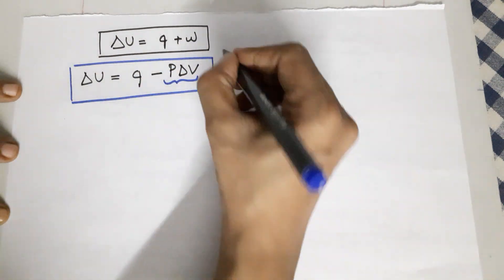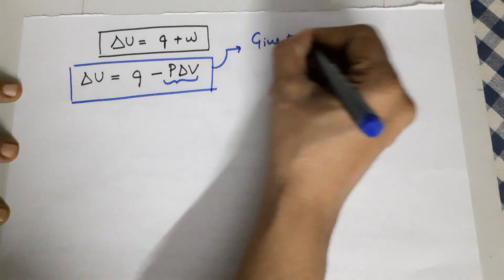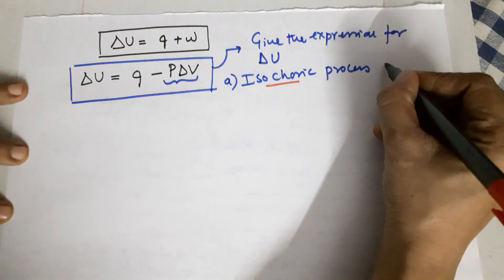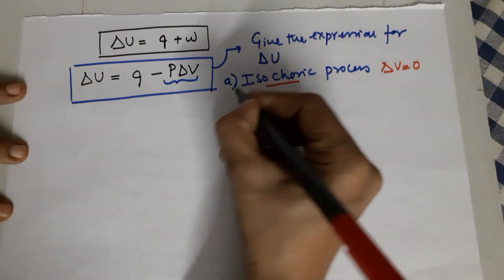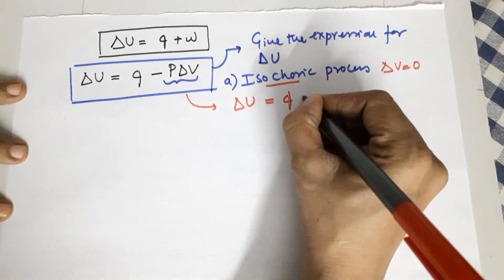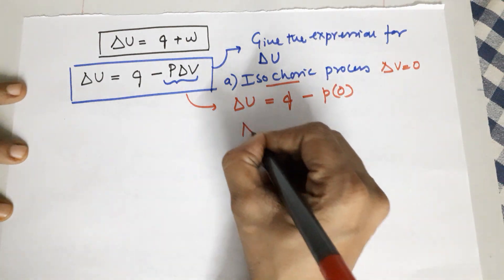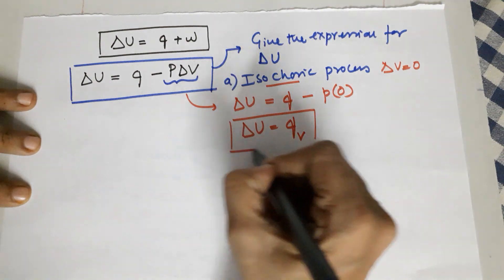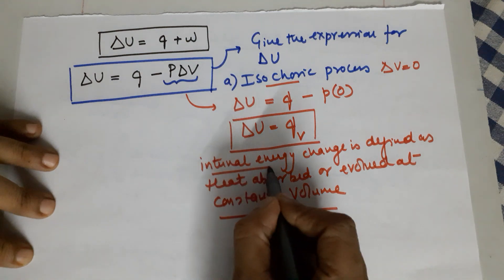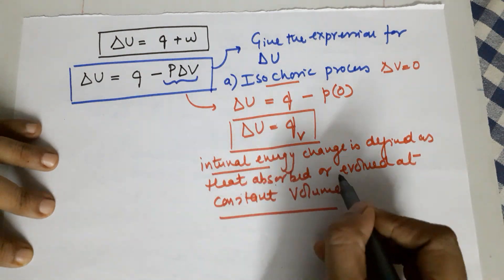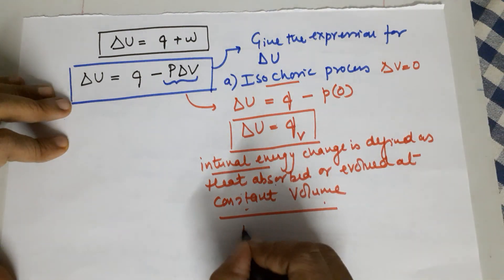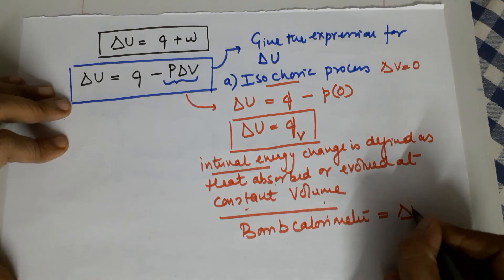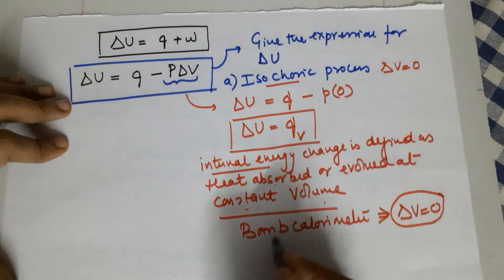For an isochoric process (no change in volume, ΔV = 0): ΔU = q − p(0) = q, so ΔU = qᵥ at constant volume. Internal energy change is defined as the heat absorbed or evolved at constant volume. The instrument used for this is the bomb calorimeter — a device where volume does not change, so all heat measurements are done at constant volume.